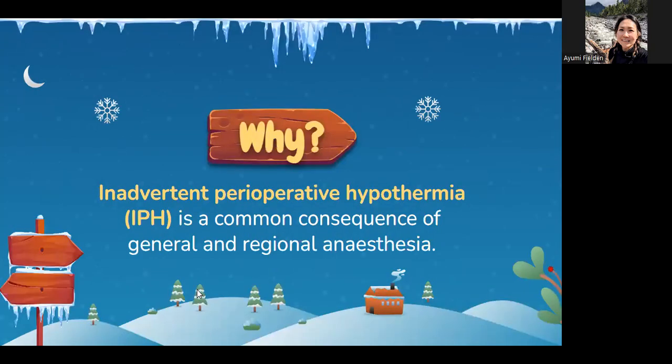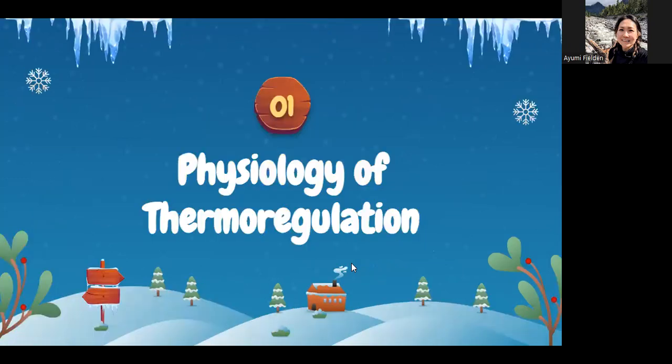Why are we talking about this? Unplanned perioperative hypothermia is a common consequence of general and regional anesthesia — it's extremely common and it has serious consequences. That's why we're discussing it. Now let's talk about the physiology of thermoregulation: how do we regulate heat?